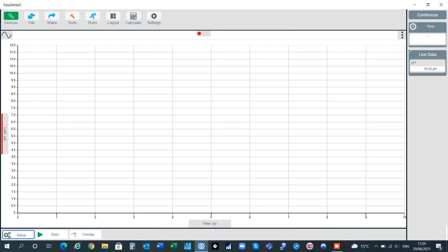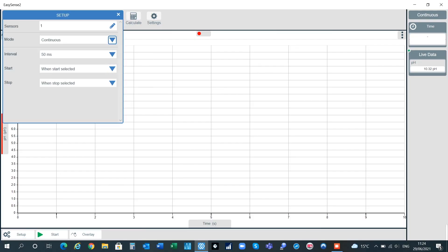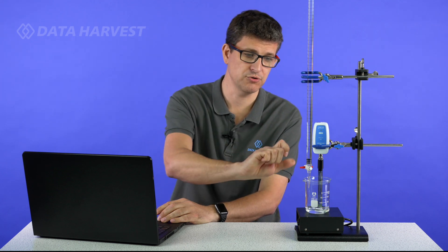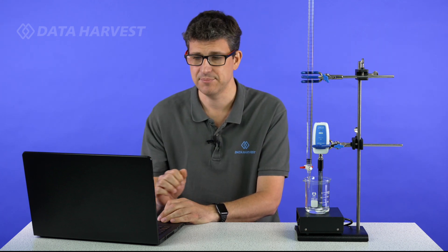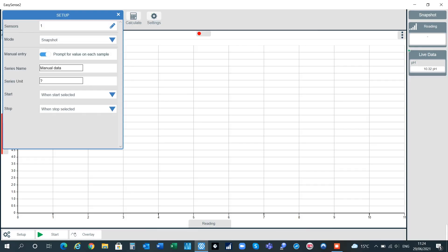We're going to set the EasySense2 software up to run the titration experiment. We go to setup. It defaults to continuous which is just a time graph but we can now change this to snapshot because we want to take a reading when I choose to take the reading so I could be more controlled when I'm also turning the tap. I do want it to prompt me because I'm going to add volume at the same time so we can plot one against the other. The series name is going to be volume because that's the extra one I'm adding and it's cm³.